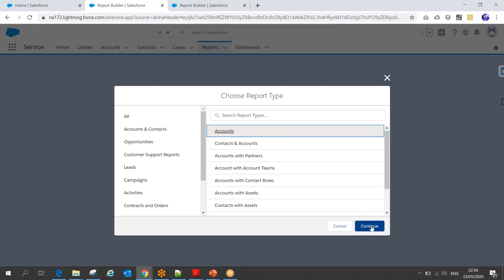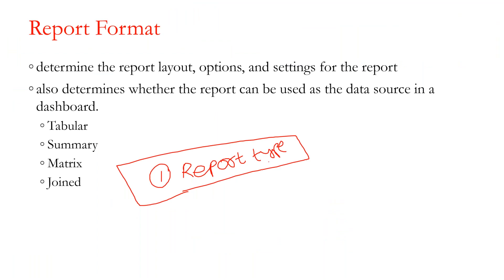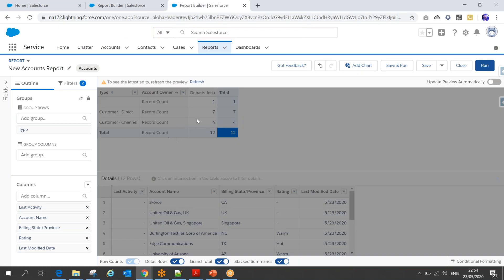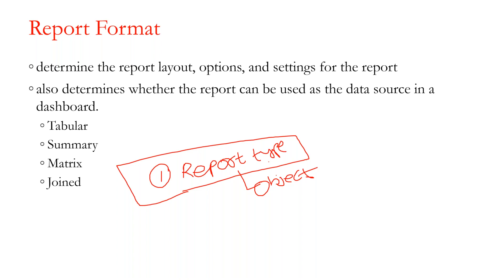Once you know your data source — which objects you want to use — the next step is the report format, which determines how you are going to present the report to your user. There are multiple formats available, and you can switch between them. For example, if you want your report in a row-and-column format, you can use the tabular report format.